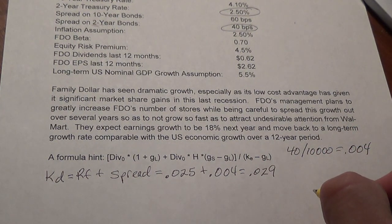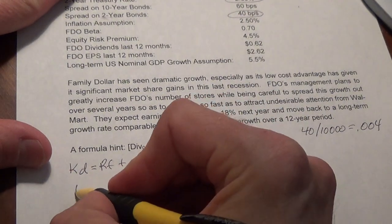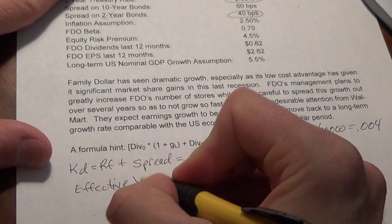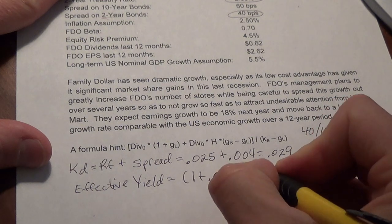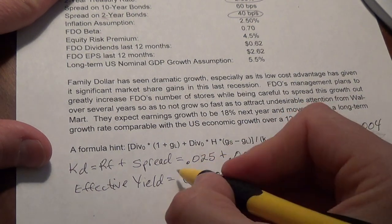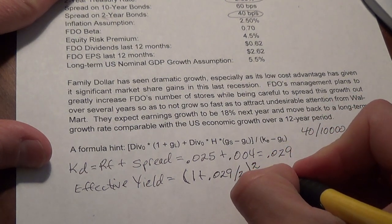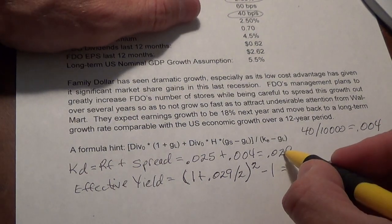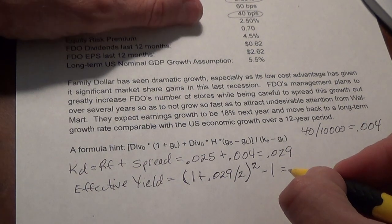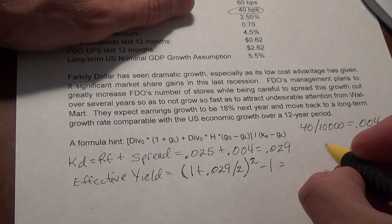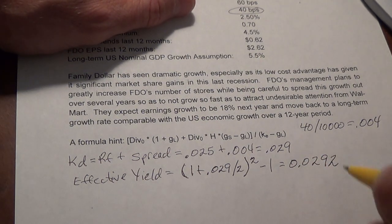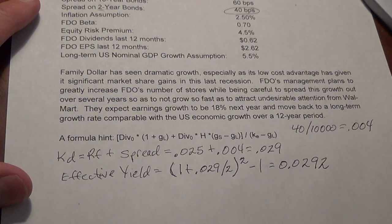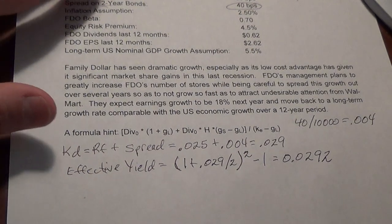Remember, these bonds pay twice a year, and that 2.9% discount rate assumes they pay once a year, so we need to get the effective yield. The effective yield equals (1 + KD / 2) raised to the second power, minus 1. You should always get a number slightly higher than KD — the higher the KD, the bigger the difference, but never more than a few basis points. In this case it's .0292, or 2.92%, which is the discount rate for the bond.